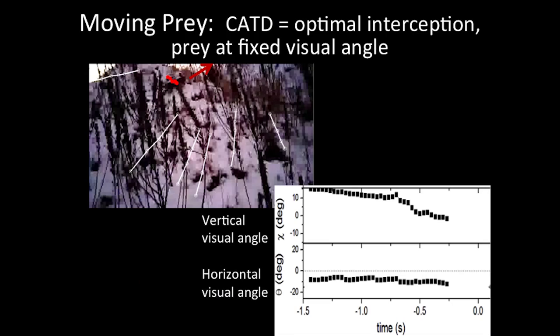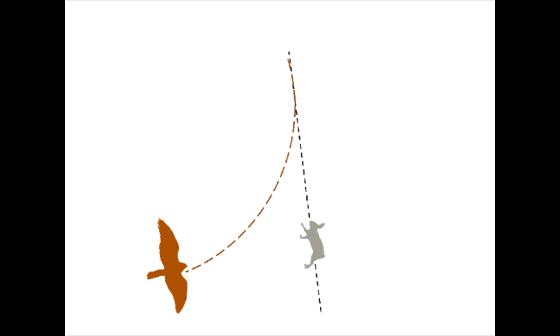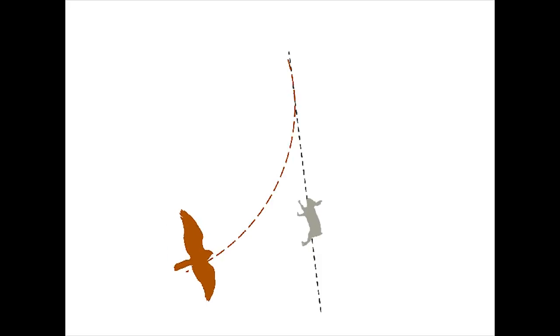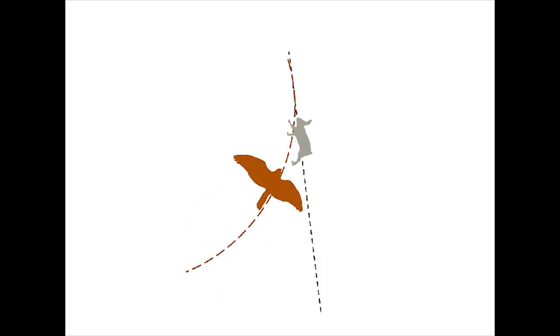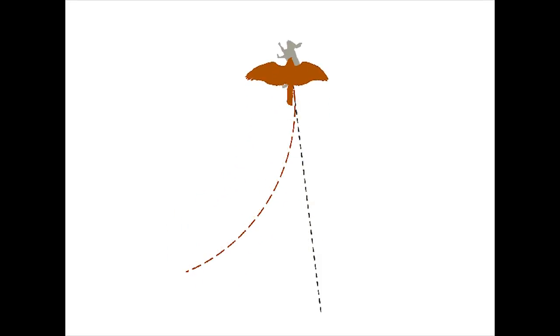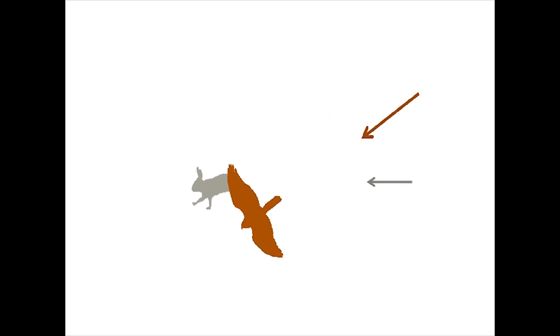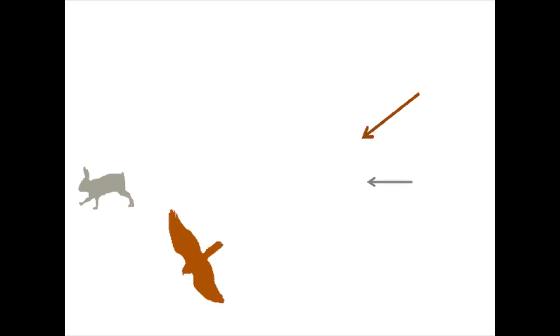Visual fixation was better along the horizontal than vertical direction. However, classical pursuit is inefficient when prey flee at an angle, while CATD gives only a short time window for capture.